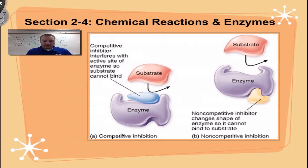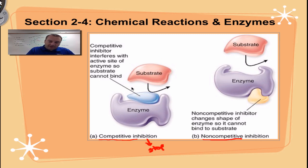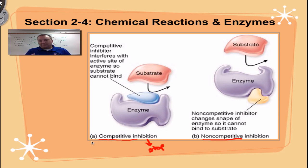Pay attention to this graphic. We have two types of chemical regulators: competitive inhibition and non-competitive inhibition. Inhibition means to stop — you're going to inhibit, or stop, something. In competitive inhibition, some other chemical clings to the active site, but the enzyme will not do what it's supposed to do — it just acts as a blocker. The substrate cannot get into the enzyme, so the enzyme won't build or break the substrate and nothing happens. If you remove this inhibitor, the chemical reaction can occur.